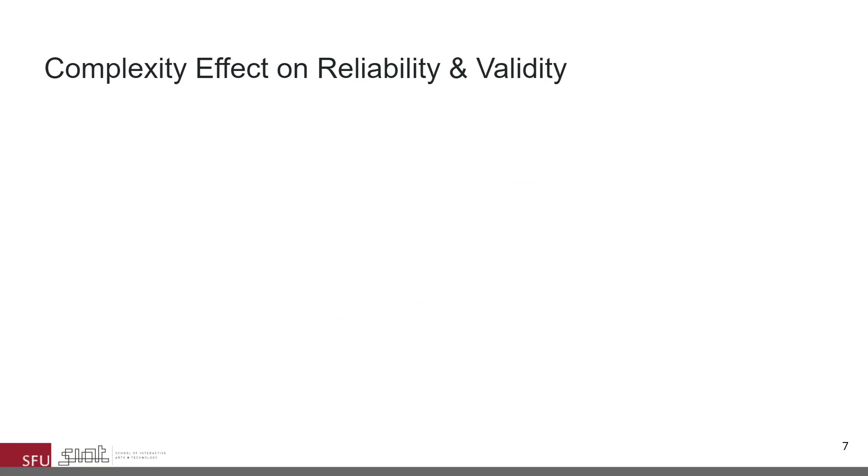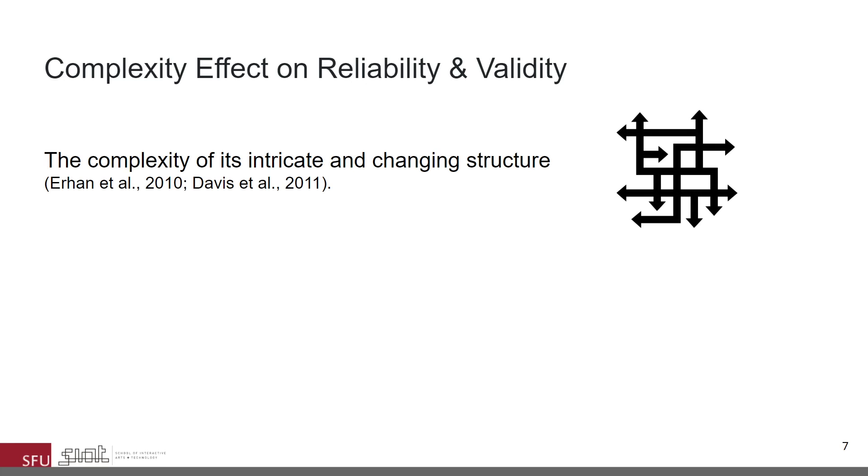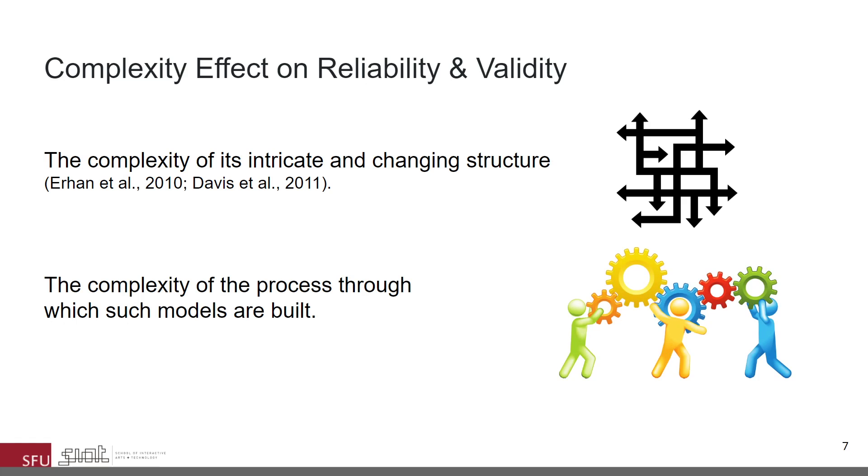Reliability and validity can be affected by two main reasons. First, the complexity of the model's intricate and changing structure, which increases parallel to the increase in the model's fidelity. Second, is the complexity of the process through which such models are built, which increases with the involvement of different people and different expertise.